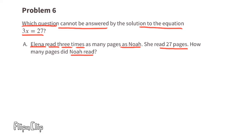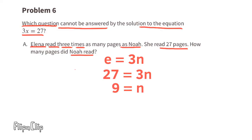Situation a: Elena read three times as many pages as Noah, and she read 27 pages. How many pages did Noah read? This can be written as 27 equals 3 times n. Solving: 27 divided by 3 equals 9, so Noah read 9 pages. Since the variable equals 9, do not select a.